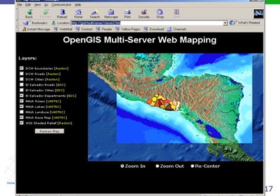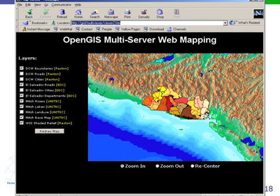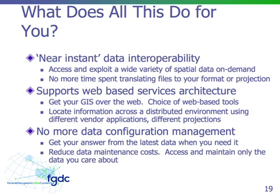Here we add another layer — the El Salvador departments — also from EROS Data Center. Zooming in, you can see more detail from the overlaid layers.